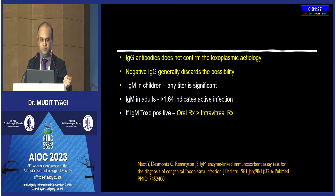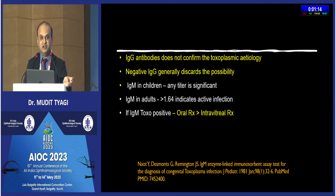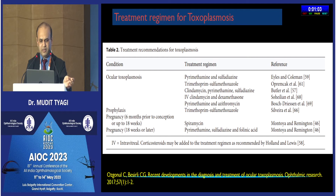Regarding serology, IgG and IgM do not hold much diagnostic value since it is primarily a clinical diagnosis. However, a negative IgG generally discards the possibility of toxoplasmosis. In children, IgM assumes importance — any significant titer is meaningful, and if IgM toxo is positive, these eyes tend to respond better to oral rather than intravitreal treatment.